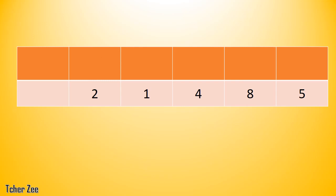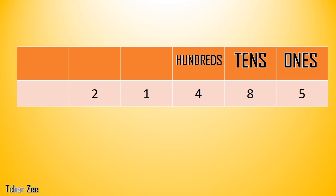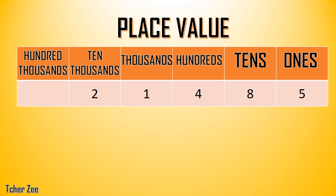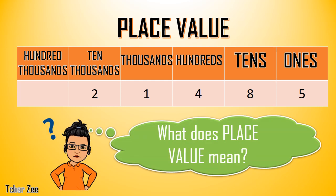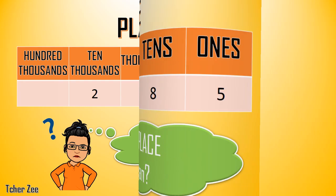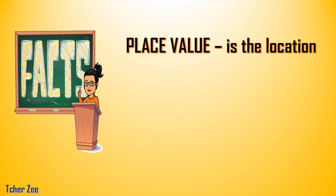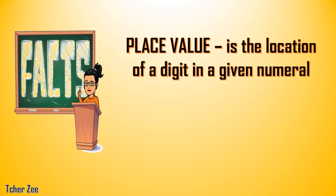So, again, these — ones, tens, hundreds, thousands, ten-thousands, and hundred-thousands — are what we call place value. But what does place value mean?